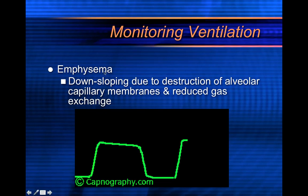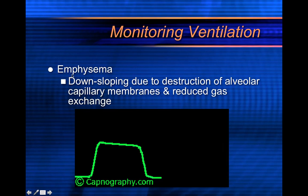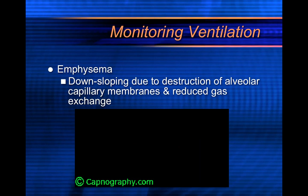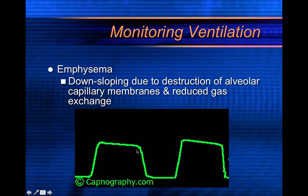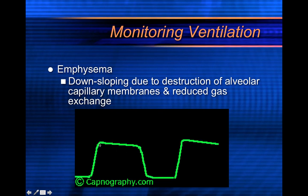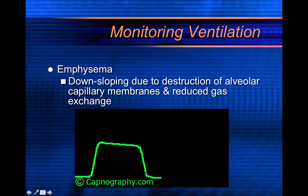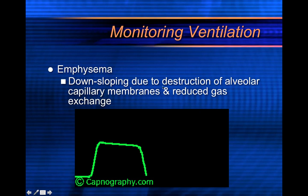Emphysema produces a downsloping capnogram due to destruction of the alveolar-capillary membrane. If you see this downsloping pattern — almost a mirror of the normal waveform — consider emphysema or COPD, and get a thorough patient history.